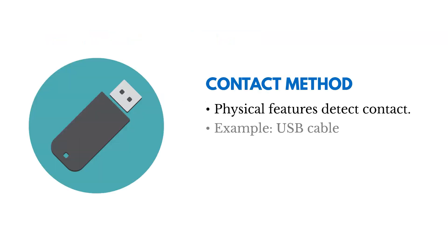The contact method involves physical features that detect contact and prevent a mistake from happening. An example is a USB cable — it only allows you to put it in one way. If you try to turn it around in the wrong direction, it's going to detect that wrong contact and prevent it from being inserted.